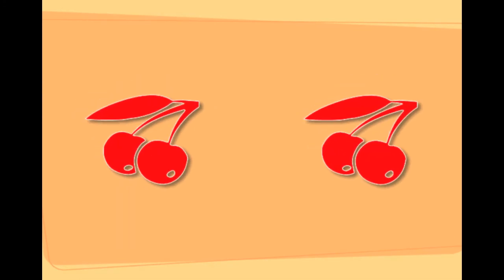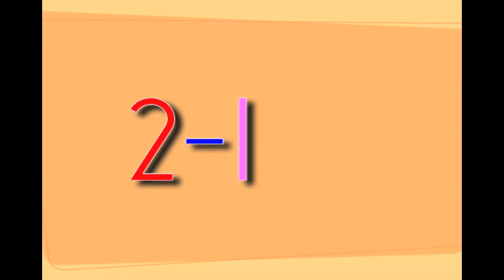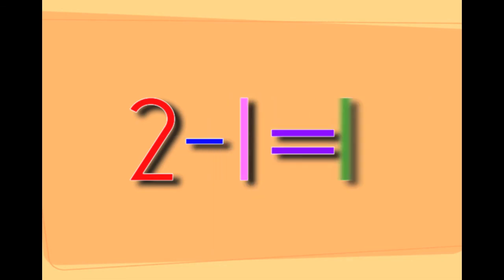These are two cherries. Taking one cherry away from the two cherries will leave you with one cherry. Two minus one equals one.